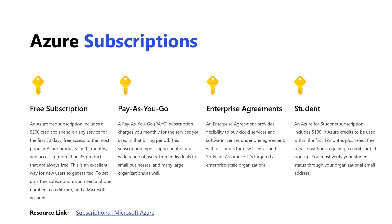There are also enterprise agreements, but those are for actual corporations — I doubt any of you will fall into that category. If you are a student, there is a student subscription. It's similar to the free subscription, but you don't get as much credit. You get 12 months to use your services, plus some additional free services after that. The nice thing is you don't need a credit card at signup. However, you do need an organizational email address — for example, a university email. I would assume if you're no longer a student, the email probably wouldn't be validated.